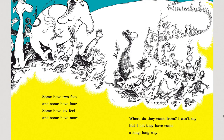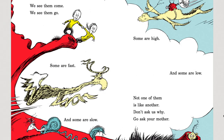Some have two feet and some have four. Some have six feet and some have more. Where do they come from? I can't say. But I bet they've come a long, long way. We see them come. We see them go. Some are fast and some are slow. Some are high and some are low. Not one of them is like another. Don't ask us why — go ask your mother.